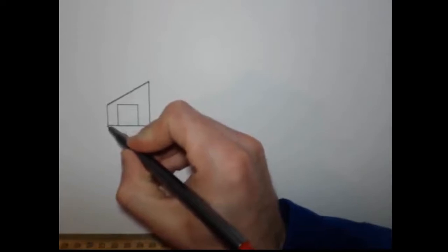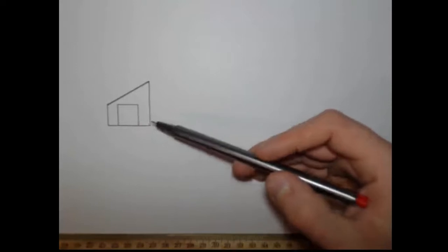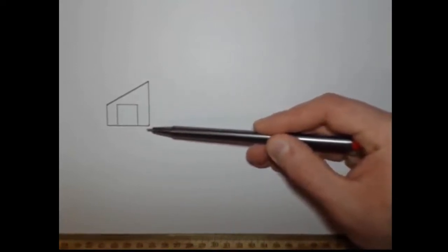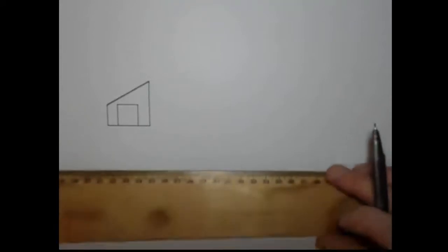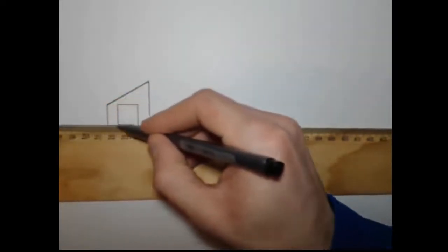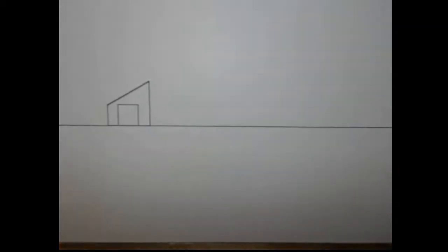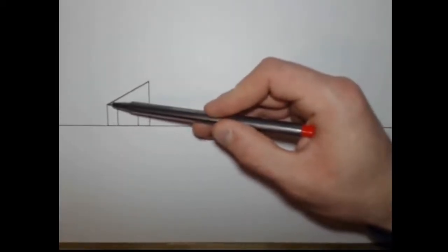So this is 2.5 meters high from the ground level right up to where the roof begins. So using that information I can actually scale up or scale down this photo. In this case we are going to scale it up. Now the first thing we will do is we will draw a common ground line using our t-square.